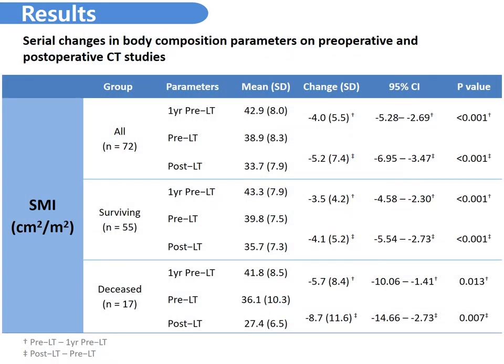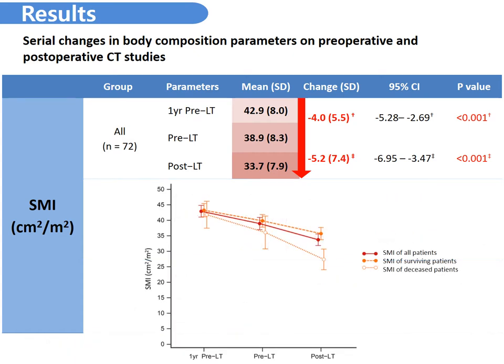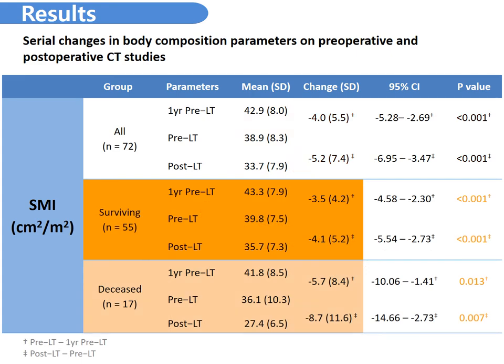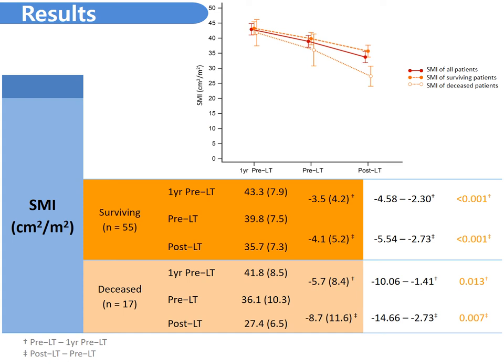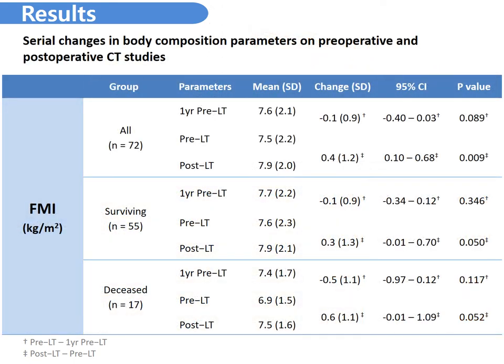This table shows the serial changes in the body composition parameters before and after DDLT. On within-subject analysis, there was a significant decrease in SMI. In subgroup analysis, the SMI declined more in the deceased patients compared to the surviving patients during both the preoperative and postoperative periods. There was also a decrease in FMI during the preoperative period, but the result was not statistically significant.